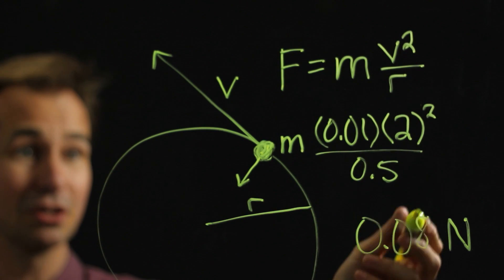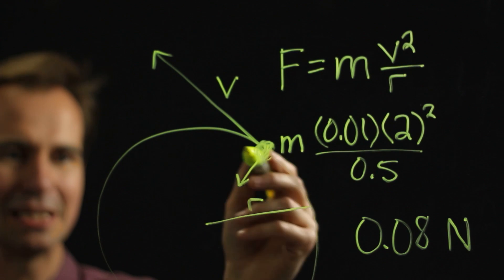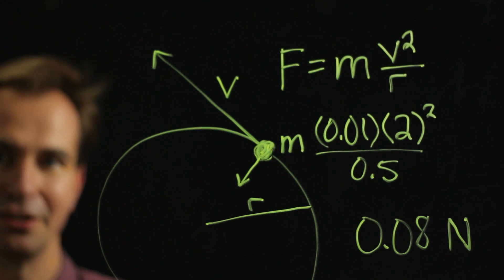One thing that you might notice from this equation is if you make it spin faster, it takes more of a force to keep it in that circle because it wants even more to go in a straight line. You can think of it like that.